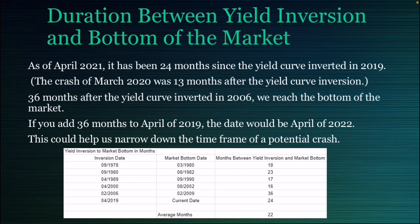There's a time duration correlation between when the yield curve inverts and the bottom of the market. We're currently in April 2021 — it's been 24 months since the yield curve inverted in 2019. When we reached the bottom of the market in March of 2020, that was 13 months after the yield curve inverted.